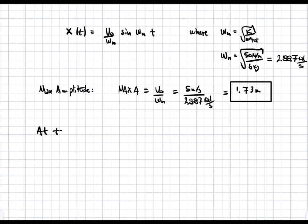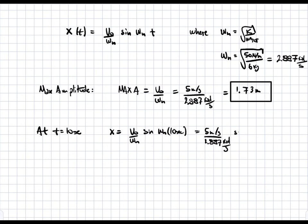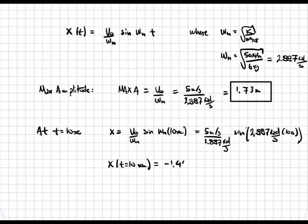For the second part, we find the amplitude at t = 10 seconds. Plugging in: x(10) = (5 / 2.887)·sin(2.887 × 10) = −1.44 meters. This is the displacement of the mass at t = 10 seconds.